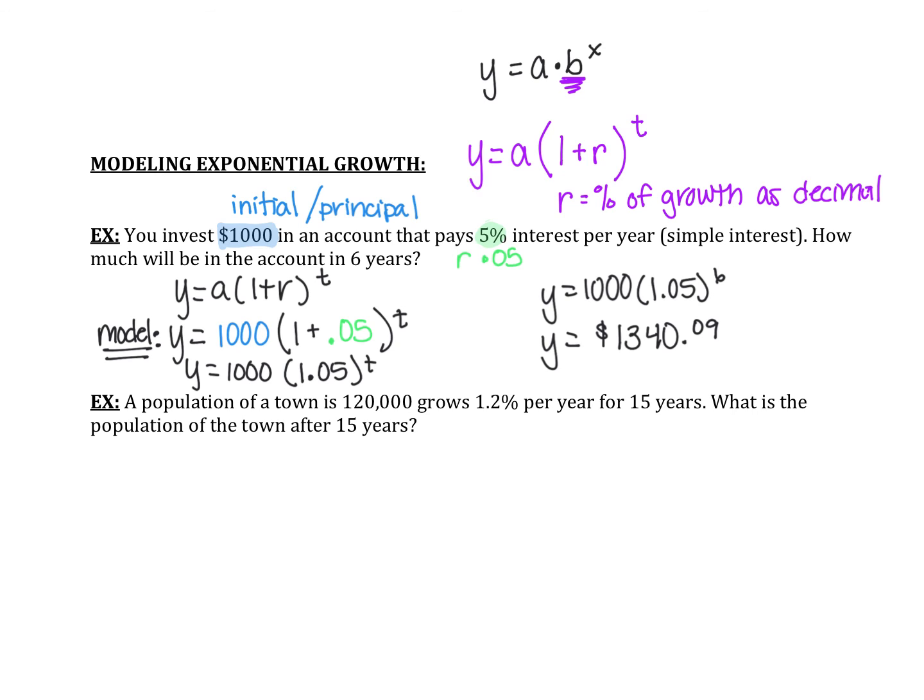We'll also talk about compound interest, which is a little different from simple interest. Most car loans use simple interest, where interest doesn't accumulate over time the same way. A house loan — which is amortized — works differently, and we'll look at that later.